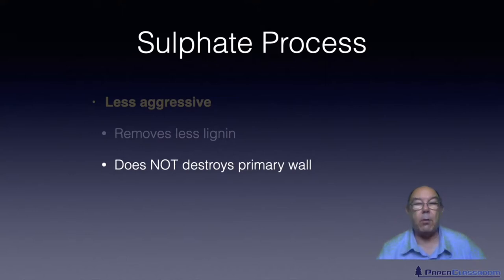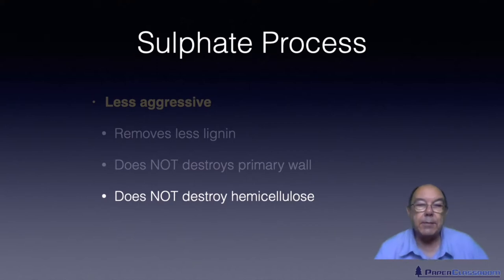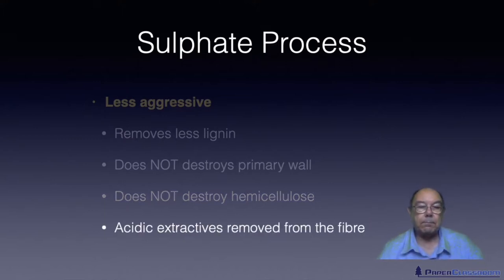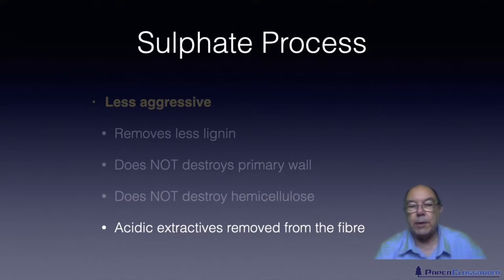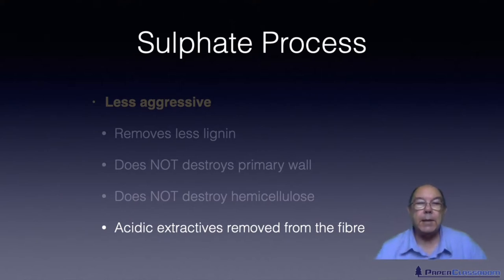The other thing the sulfate process does is it does not destroy the hemicellulose — and this was the key to the success of this process. Leaving the hemicellulose intact is what gives you the stronger piece of paper. Also, the acidic extractive materials in the fiber — because the process is alkaline — react with them and encourages them to dissolve out into the process liquid, removing them from the fiber. So when you get the pulp in the mill, you do not have the same stickies problems as you do from a sulfite process.